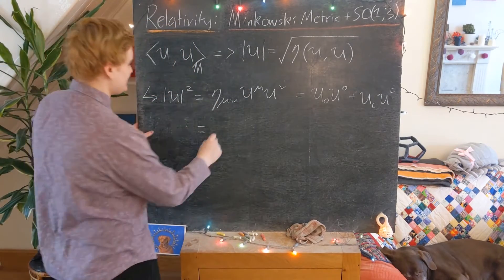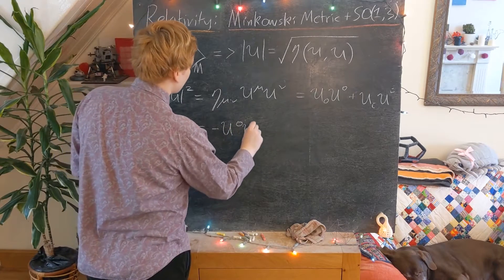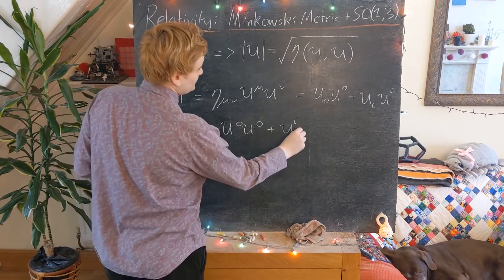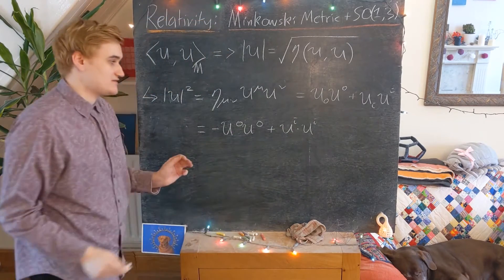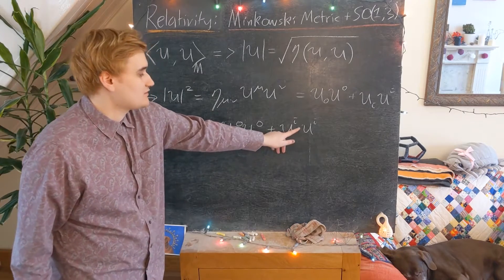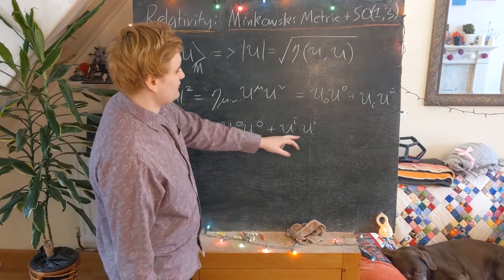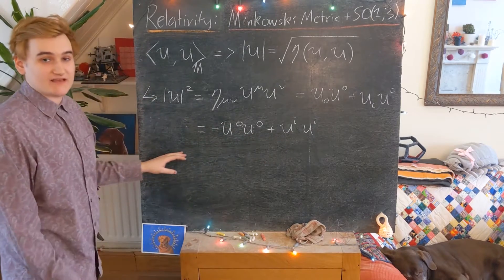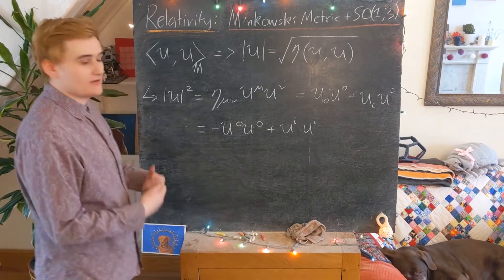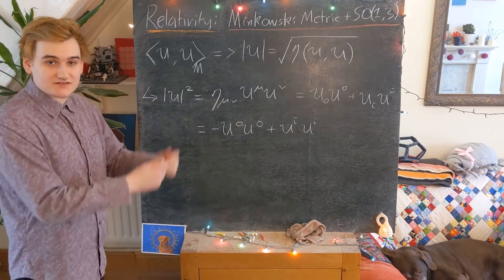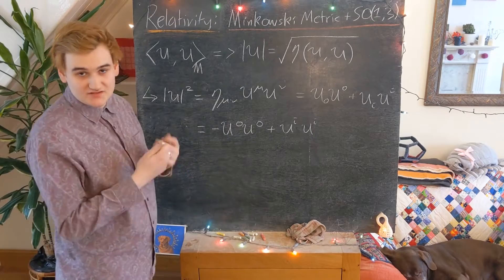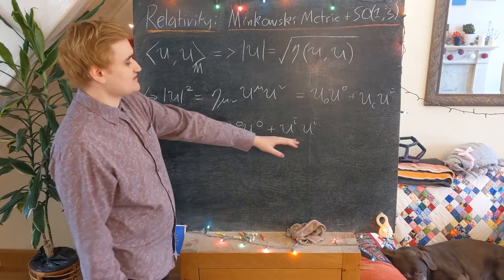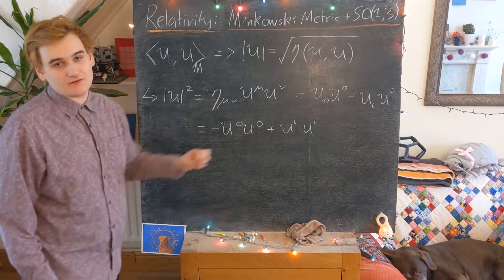And of course, we know it has its more usual expression, which is minus the time vector components squared and then plus, if you like effectively, the Euclidean dot product, or just the product of our spatial vector components. So this is the form, if you like, of our Minkowski inner product. It's just kind of taking the vector components, multiplying them together, or just squaring them, and then adding them together with some minus or positive coefficients.